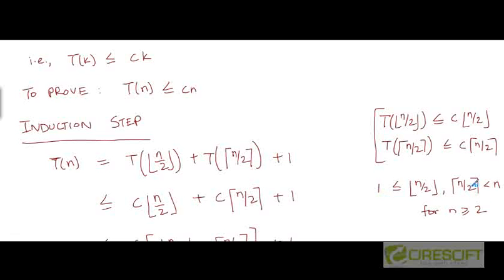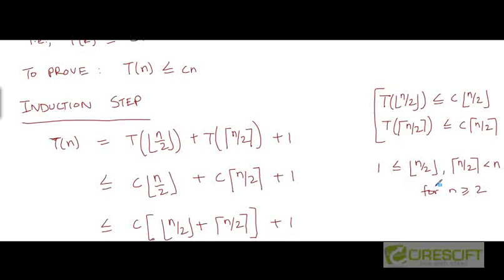So assuming the induction hypothesis and assuming that we are looking at values of n greater than or equal to 2, we can replace these two terms by their corresponding right hand sides. Now if the value of n had been less than 2, we would need to show that the claim holds there separately. And we have already done that in our base case.